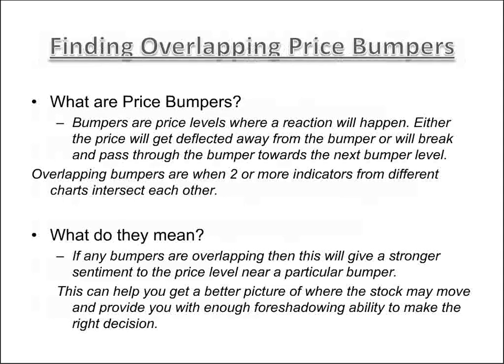Price bumpers are price levels where a reaction will happen — either the price gets deflected away from the bumper, or it breaks through toward the next bumper level. Overlapping bumpers occur when two or more indicators from different charts intersect or overlap at the same price. If bumpers are overlapping, this gives a stronger sentiment to that price level and a better picture of where the stock is heading — a foreshadowing ability to make a better decision.